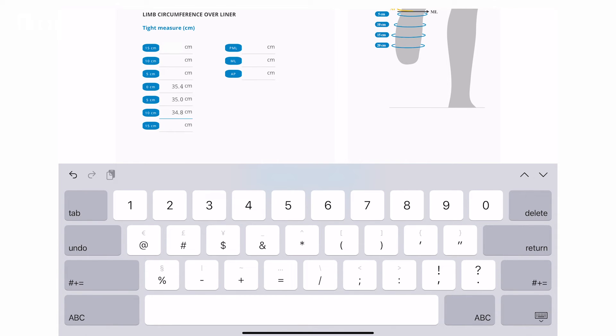If the most distal measurement location is difficult because the tape measure wants to slide off, it's okay to leave that field blank.